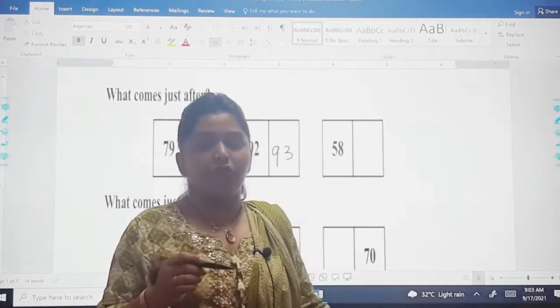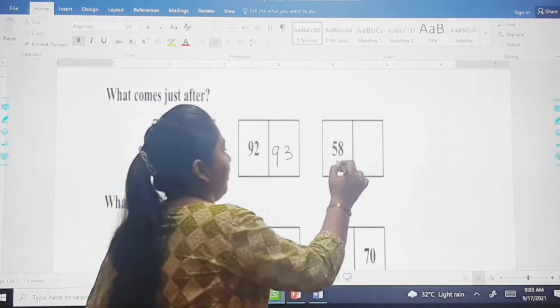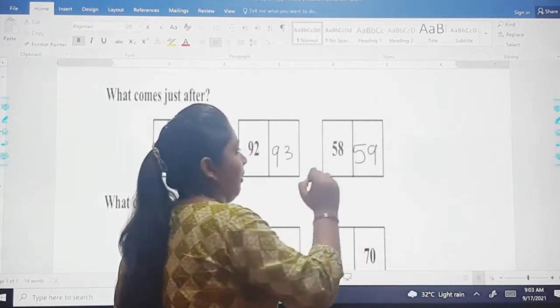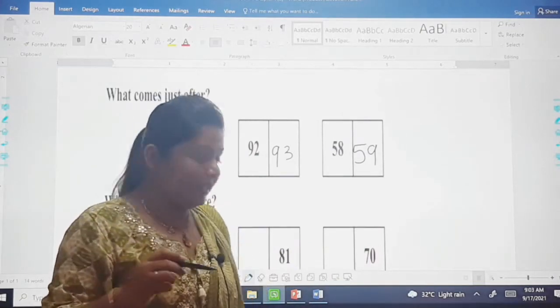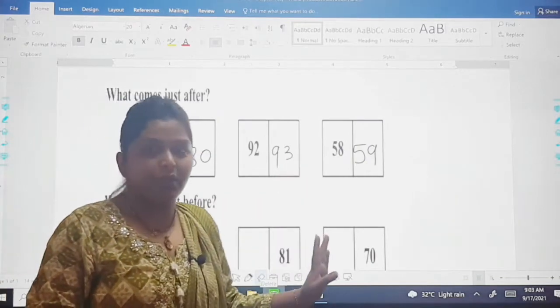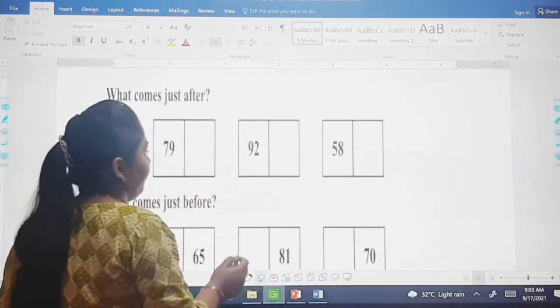After 58, dear children. After 58, which number comes? That is your number 59. Is it clear to you all? Understood the first question, dear children? This is how you have to solve the first question.